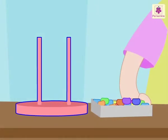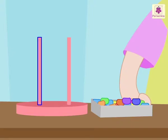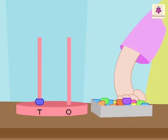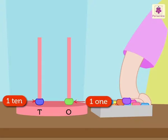The abacus has two rods and many beads. One rod is for tens and the other is for ones. Each bead in the tens rod represents one ten and each bead in the ones rod represents one one.